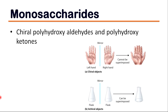Let's first look at monosaccharides. Monosaccharides are chiral polyhydroxy aldehydes and polyhydroxy ketones. In chemistry, a molecule or ion is called chiral if it cannot be superimposed on its mirror image by any combination of rotations, translation, and some conformational changes.